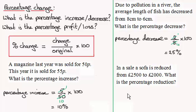Now for the last question here. In a sale, a sofa is reduced from £2,500 to £2,000. What is the percentage reduction? So for an intro for this, we'll just put percentage reduction. And what's that reduction mean?